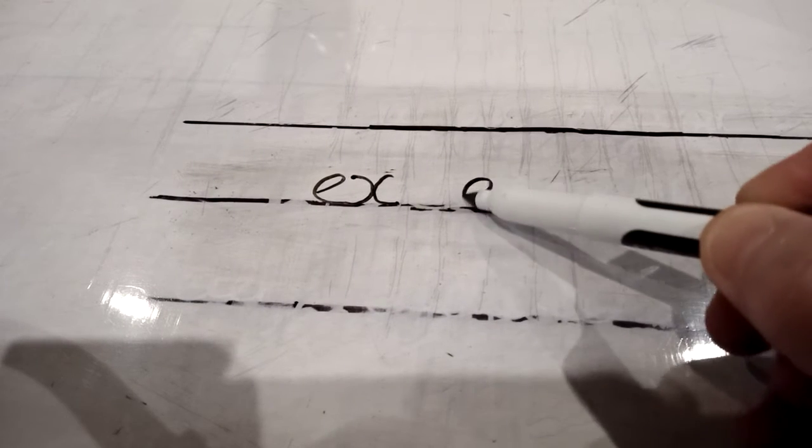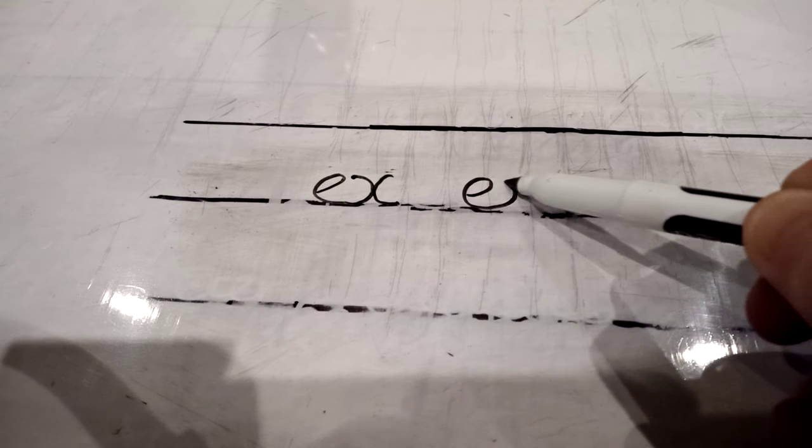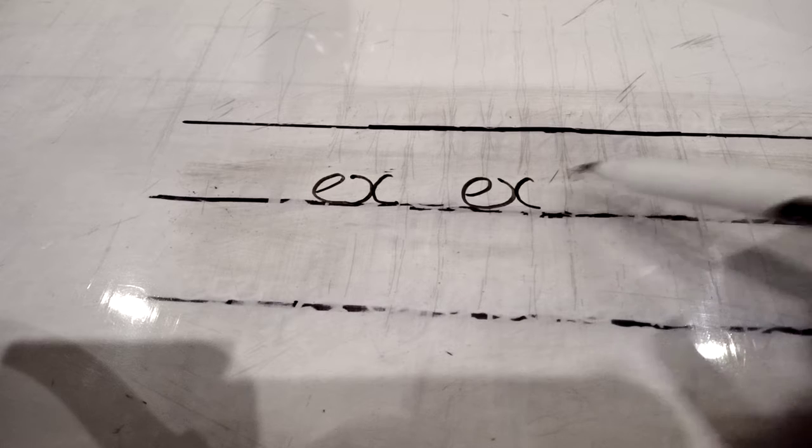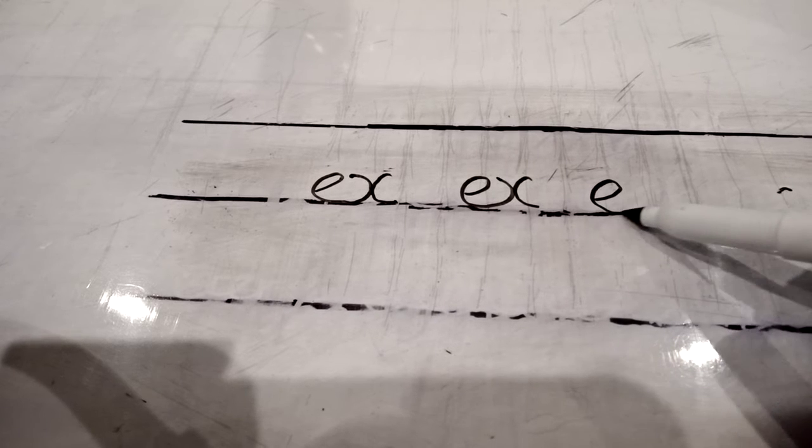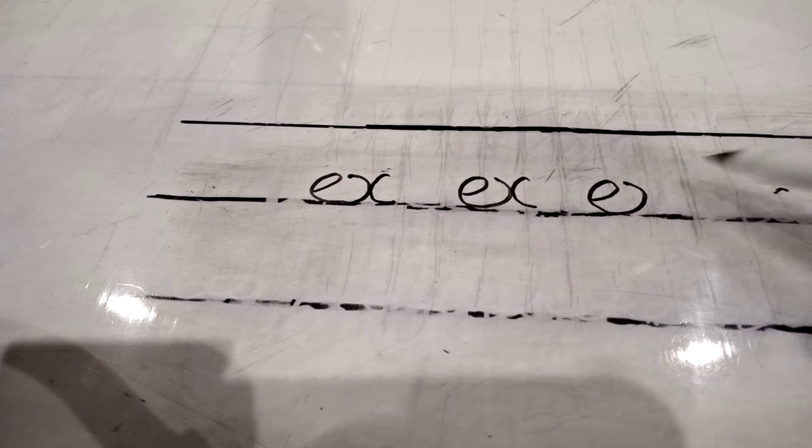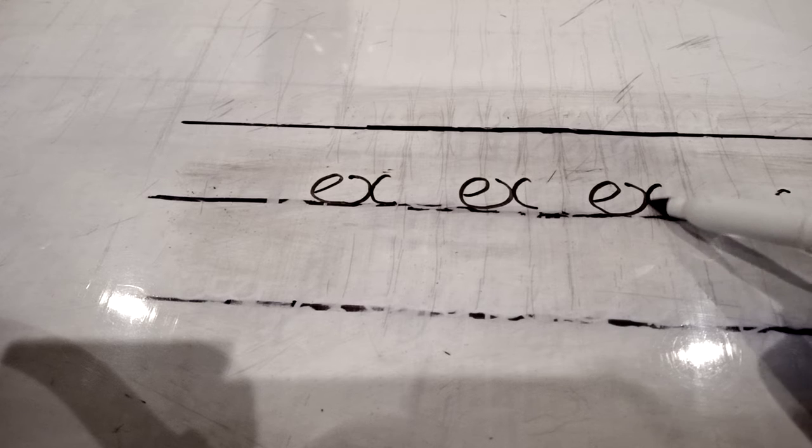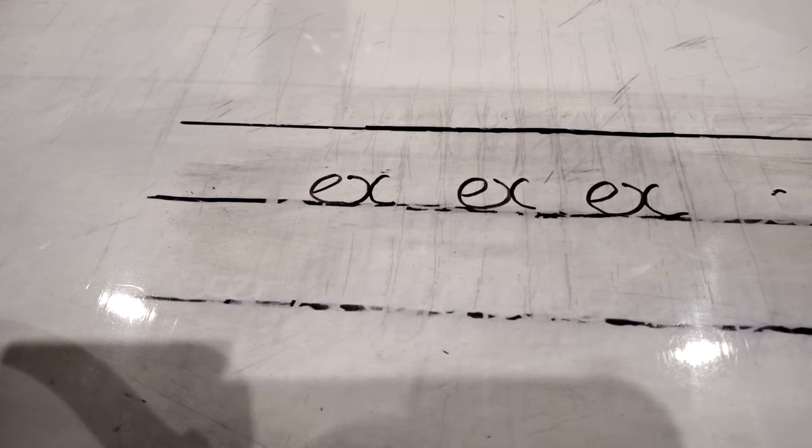So the E sweeps up, the X scratches E's head, comes off and then finishes itself off. So E, curl back up, scratch E's head, come off and it comes back down. Make me 20 of those.